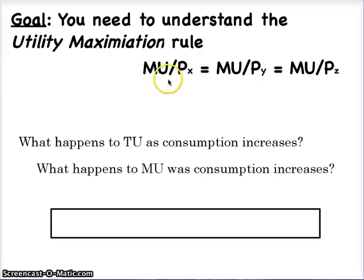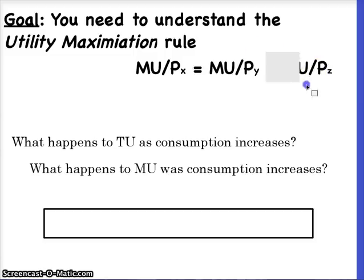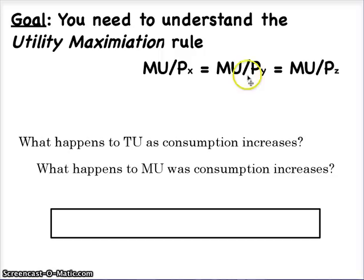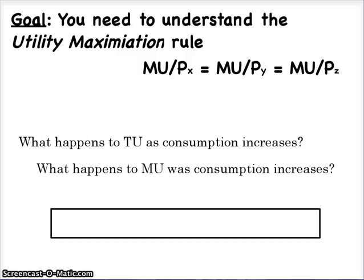The formula that we need to know is MU over P of one product X needs to equal MU over P of Y, a second product. In reality, what we're trying to do is have our marginal utility over price of one product equal marginal utility over price of a second product, a third product, fourth product, and so on — across all the different products we buy using our budget. We want the marginal utility over price to equalize to maximize our total levels of satisfaction. In our examples, we're only going to be paying attention to two products — it's a simplified economic model.